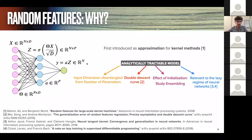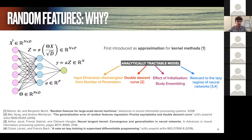To study this question, we're going to look at the random features model, which was introduced as an approximation for kernel methods on large datasets. It can be viewed as a two-layer network where the first layer of weights theta is fixed, and we only learn the second layer of weights. This model was recently shown by Song Mei and Montanari to display the double descent curve. In addition to simpler models like linear regression, in this model we can disentangle the input dimension — the number of nodes in purple — from the number of parameters in blue, and we have a notion of non-linearity in the projection. Crucially, the fixed first layer can mimic the effect of initialization in neural networks, enabling us to study the effect of ensembling.